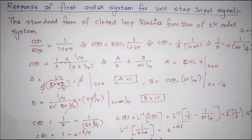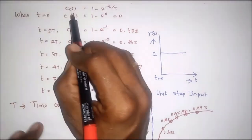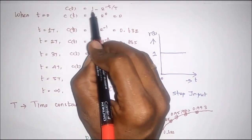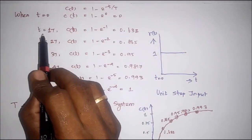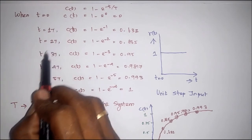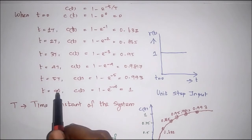The response C(t) equals A into (1 minus e to the power minus t by T). We take various time values and substitute into this equation to get the corresponding output values. We can take t equal to 0, then t equal to T, t equal to 2T, t equal to 3T, t equal to 4T, t equal to 5T, and finally t equal to infinity.